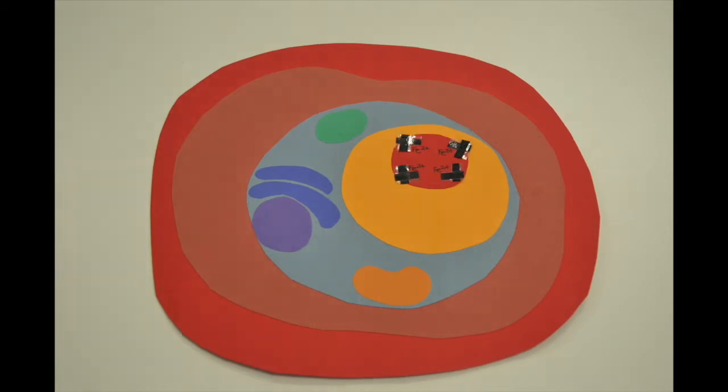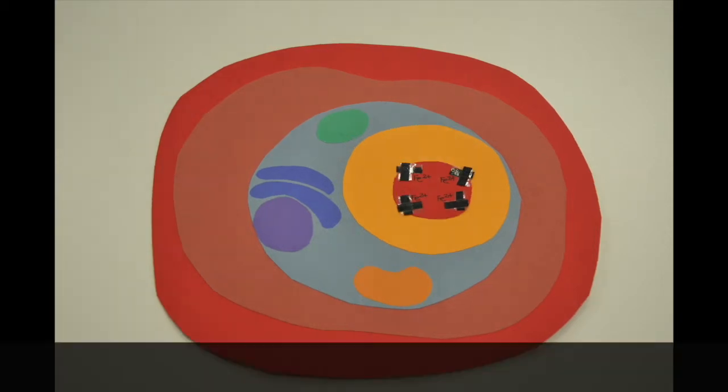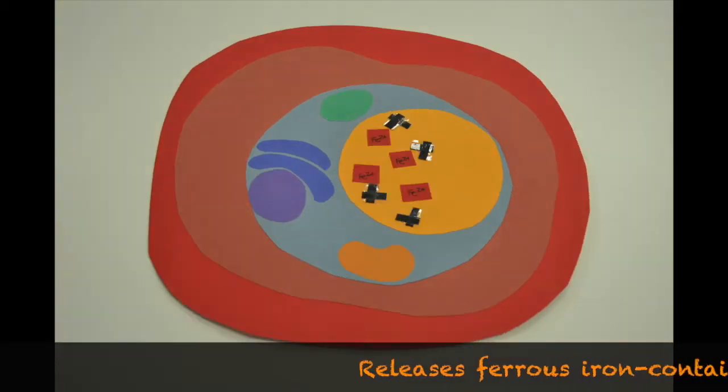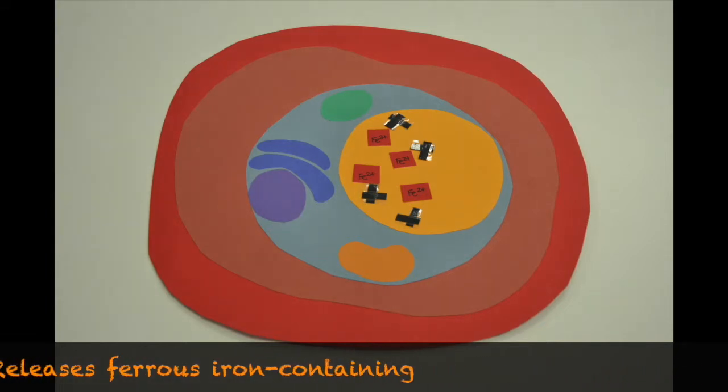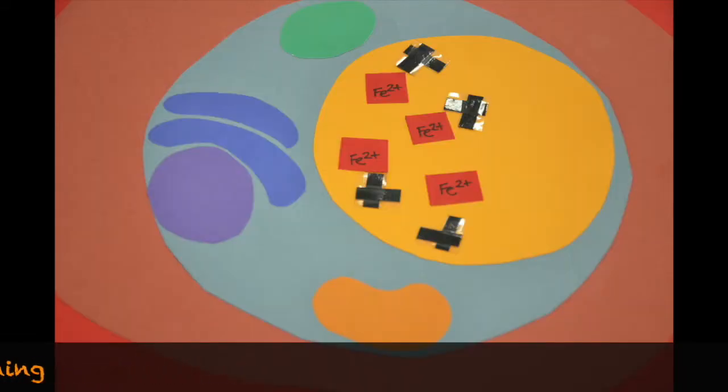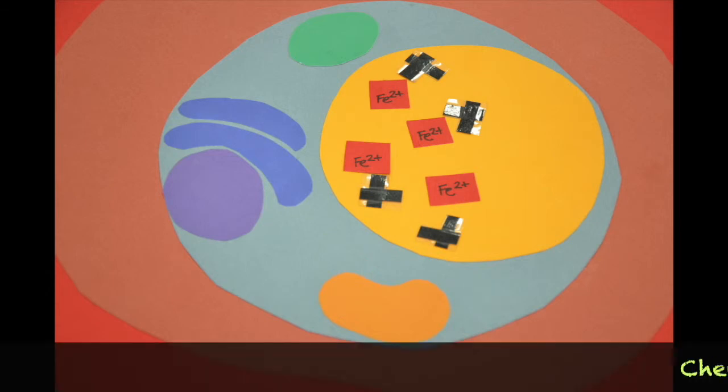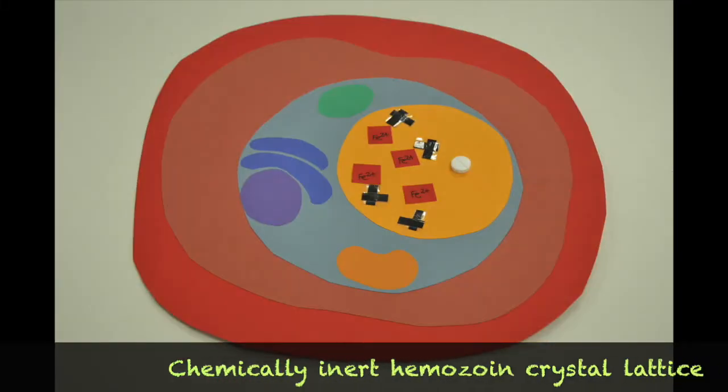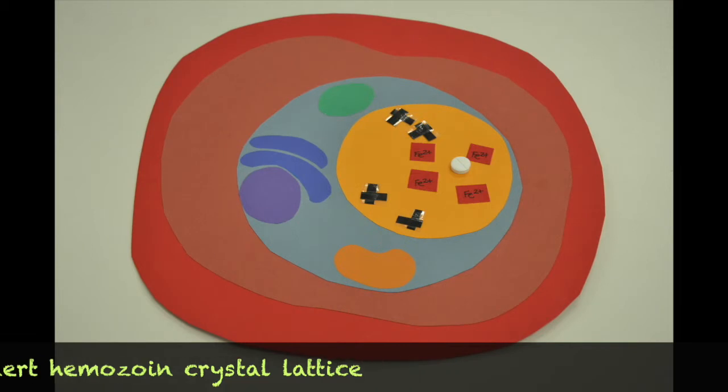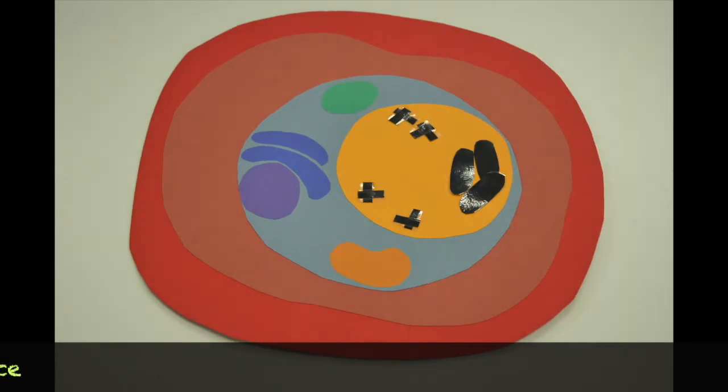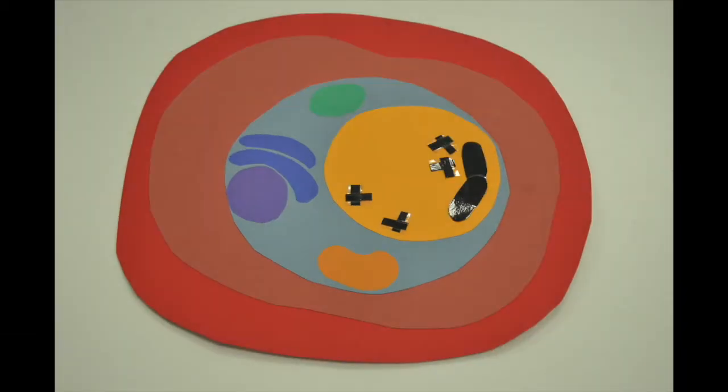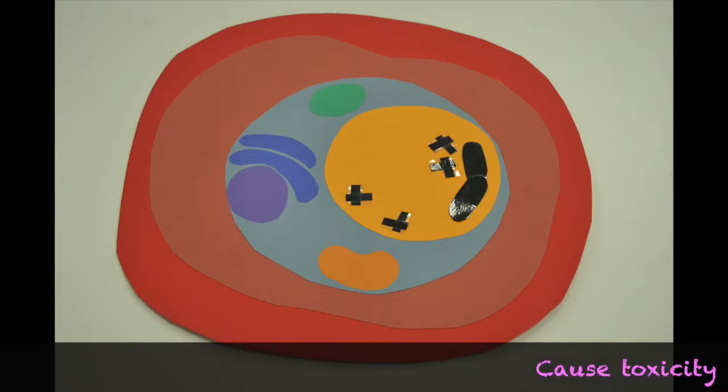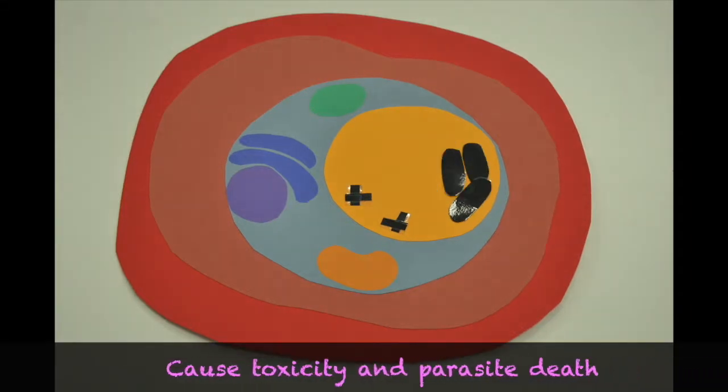Plasmodium metabolises haemoglobin inside an acidic food vacuole, resulting in a build-up of toxic heme. This process releases ferrous iron-containing reactive heme, which is thought to activate the artemisinin class of drugs. The parasite detoxifies heme by incorporating it into a chemically inert haemozoin crystal lattice. Drugs of the chloroquine class target this process of haemozoin formation to cause toxicity and parasite death.